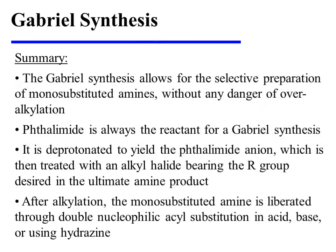In summary, the Gabriel synthesis allows for the selective preparation of monosubstituted amines without any danger of overalkylation. Thalamid is always the reactant for a Gabriel synthesis. It is deprotonated to yield the thalamid anion, which is then treated with an alkyl halide bearing the R group desired in the ultimate amine product. After alkylation, the monosubstituted amine is liberated through doubled nucleophilic acyl substitution in acid, base, or using hydrazine.